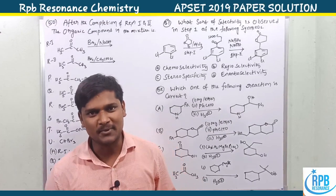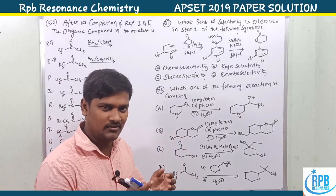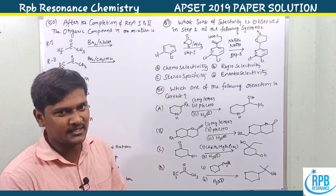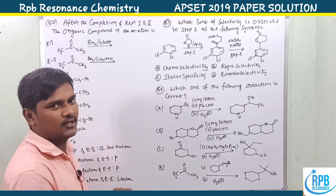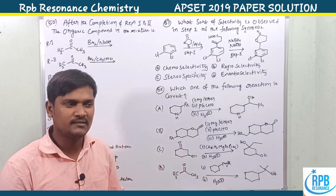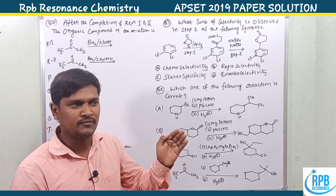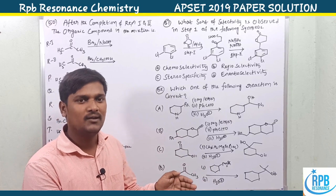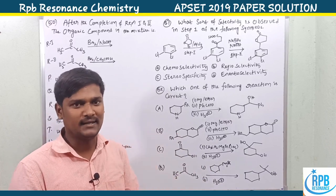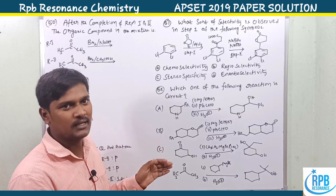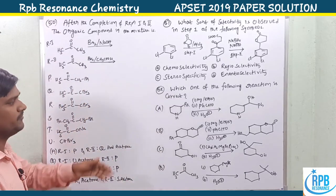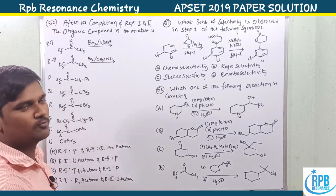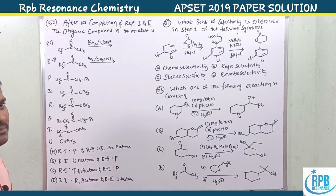Hi everyone, welcome to RPB Resonance Chemistry. Let's continue our lectures on the 2019 paper solution, episode part four. In previous lectures I covered problems 34 to 43 in one lecture, and 44 to 49 in another. Now onwards I am discussing problems 50, 51, 52, and some more examples.